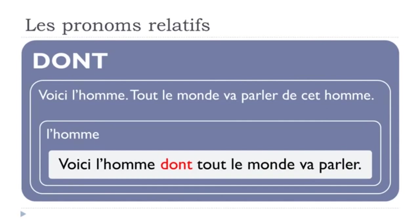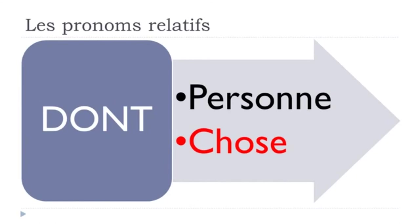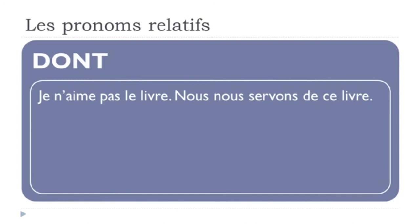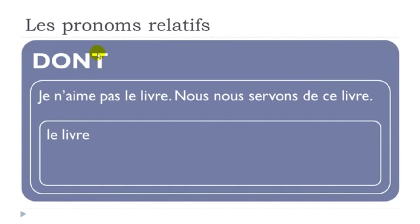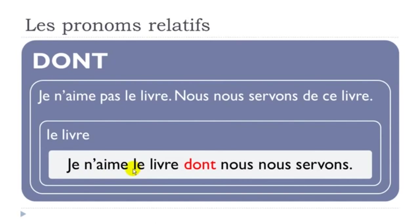Now replacing a thing with 'dont': 'Je n'aime pas le livre. Nous nous servons de ce livre.' The verb 'se servir de' uses the preposition 'de', so we use 'dont': 'Je n'aime pas le livre dont nous nous servons.' Remember to keep the negation 'ne...pas' in the sentence.